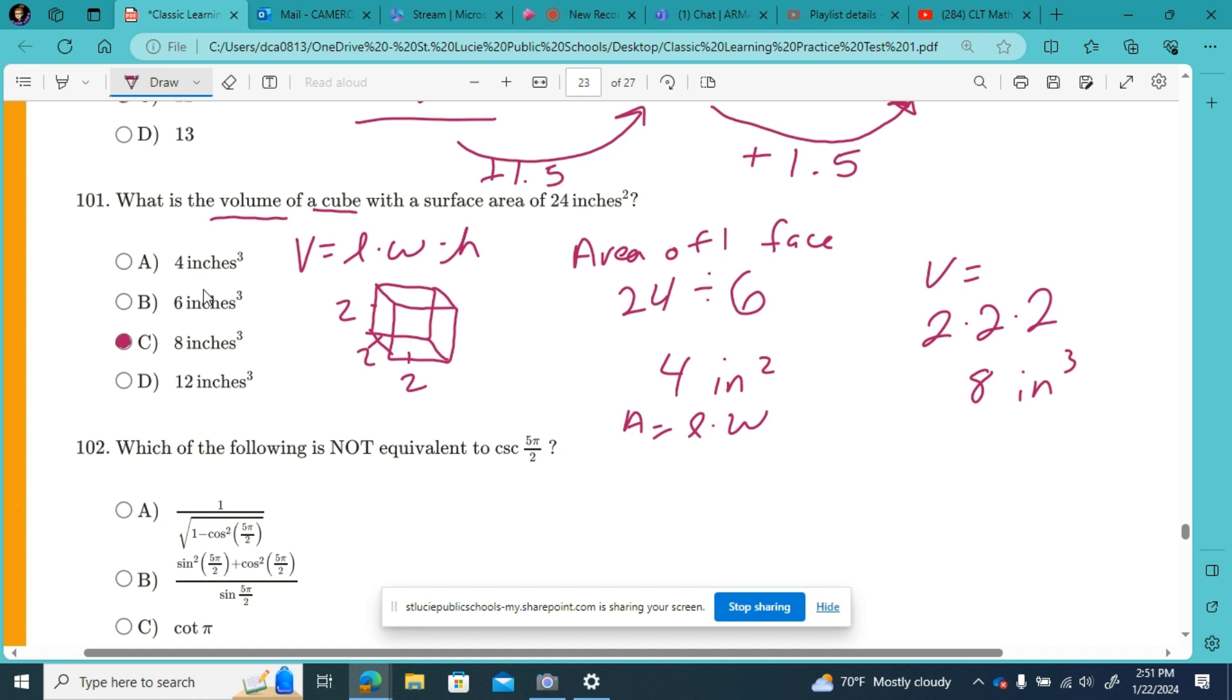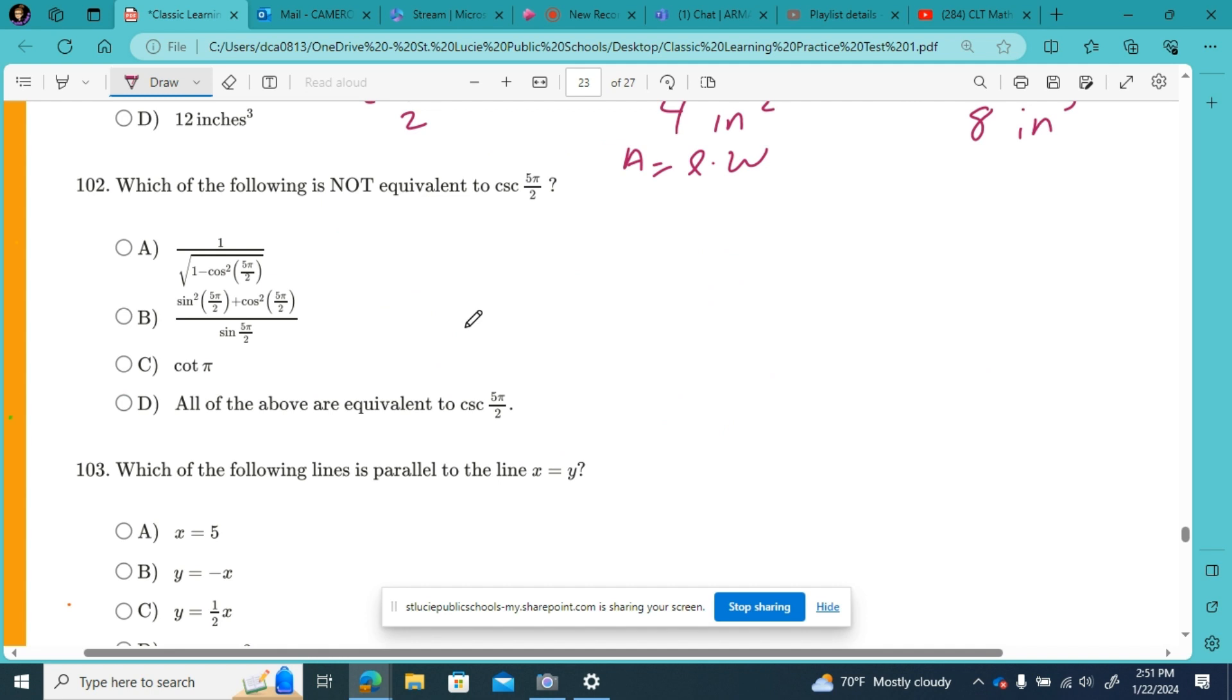And the last question I'm going to look at on this video is number 102. This is kind of a little bit more of a higher level trigonometry question than what we've been doing in class. So if that's not really your cup of tea, then you might want to go ahead and tap out here on this video. If you're interested in how to solve question number 102, I'll do my best to explain that now. Which of the following is not equivalent to the cosecant of 5π over 2?